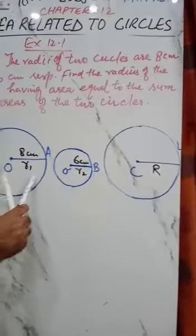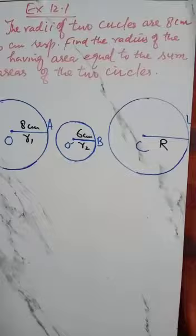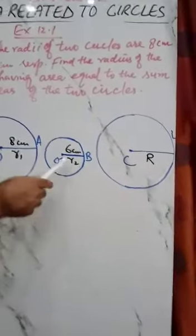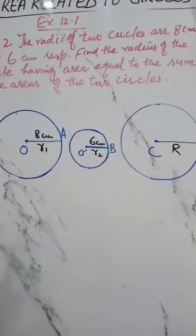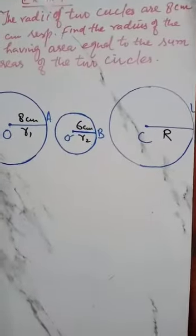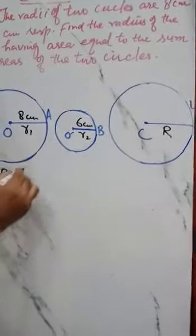So r1 is 8 cm, r2 is 6 cm, and we need to find the radius of the required circle. So let us start the solution. Let r be